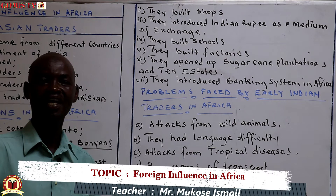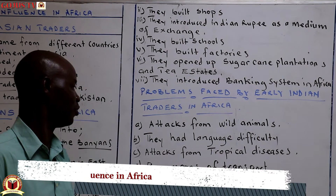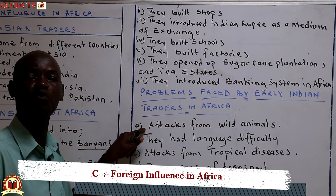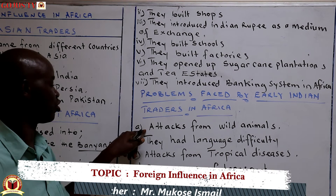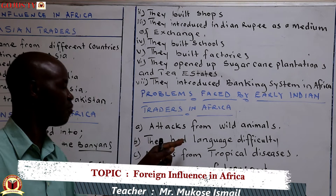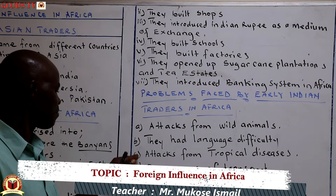While in East Africa, these people had challenges. For example, they faced attacks from wild animals. During that period Africa had not yet been developed, so it was very difficult for these people to move safely and they were being attacked by wild animals. They also had the challenge of language difficulty — they knew only their own language, and the natives did not know the Indian language.